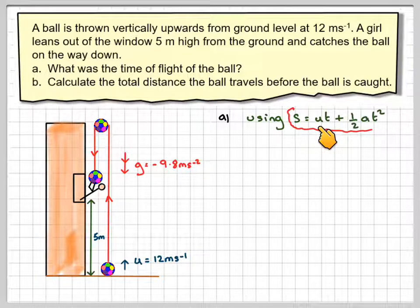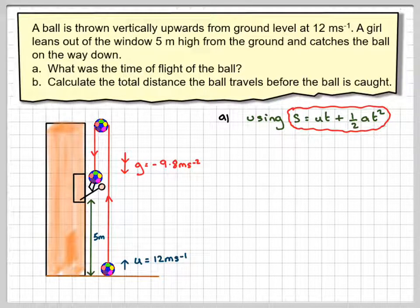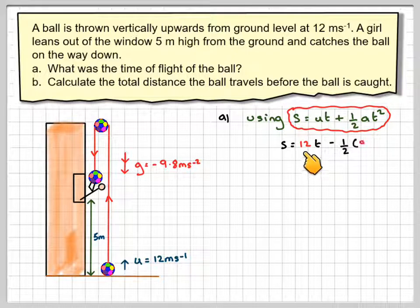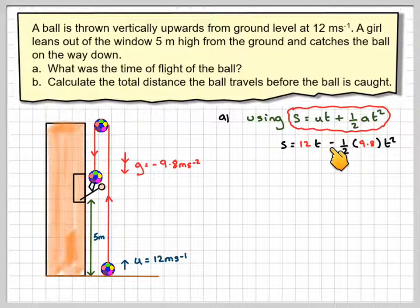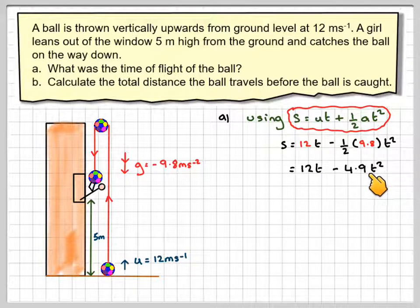So if we use s is equal to ut plus a half at squared, then s will be 12t minus, because gravity is acting downwards, half 9.8t squared, and that simplifies to 12t minus 4.9t squared.